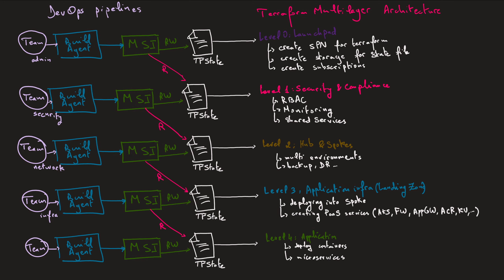One thing to keep in mind at the end of this video: I have given an example with splitting Terraform configuration into four or five levels, but that could actually be only two levels, or even seven or eight levels — depending on your use case, how many teams you have, what the real architecture you are creating is, and how you architect your infrastructure itself.